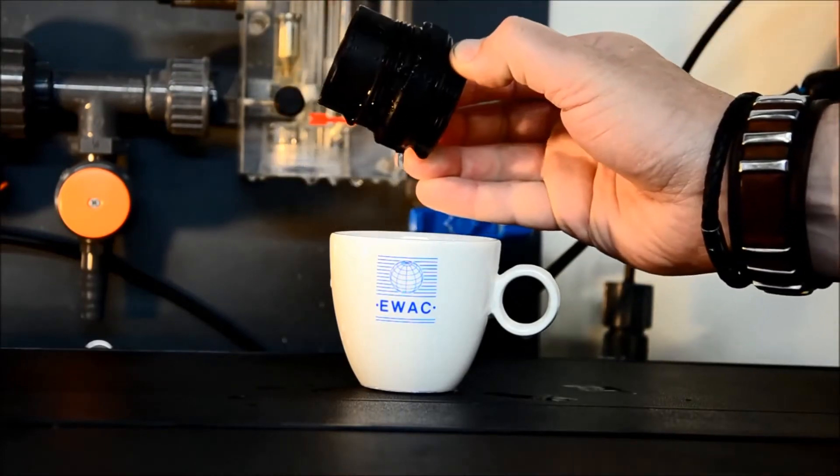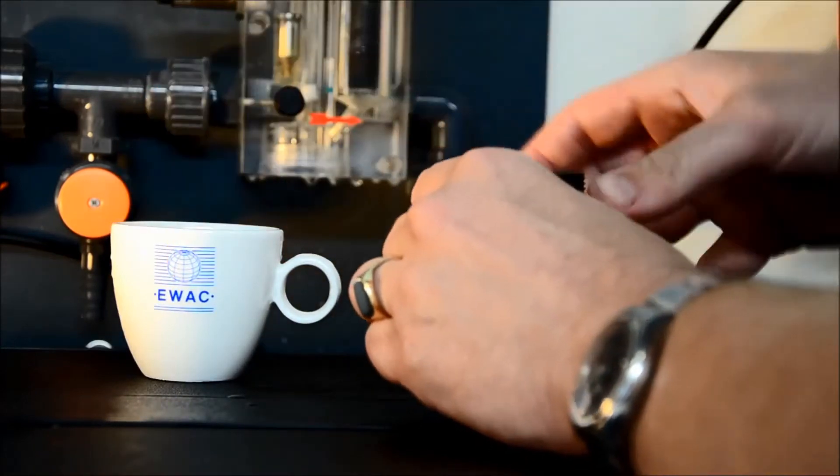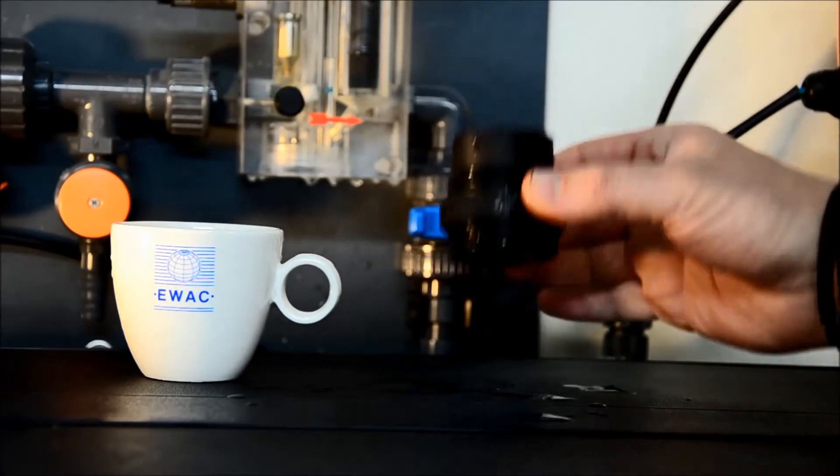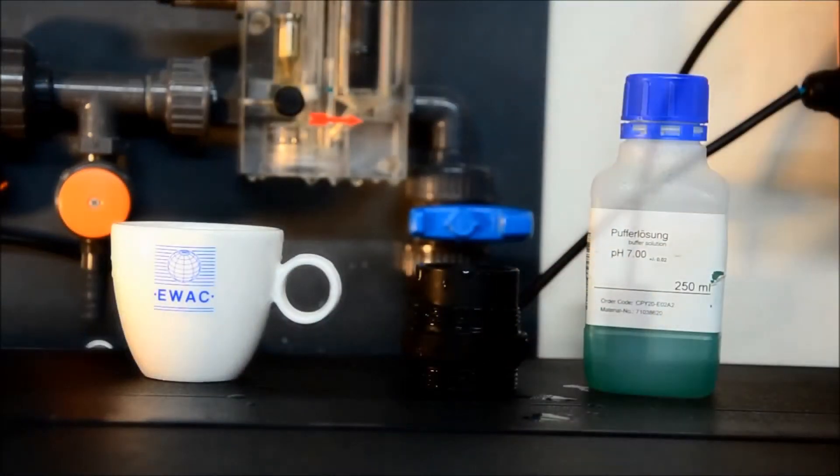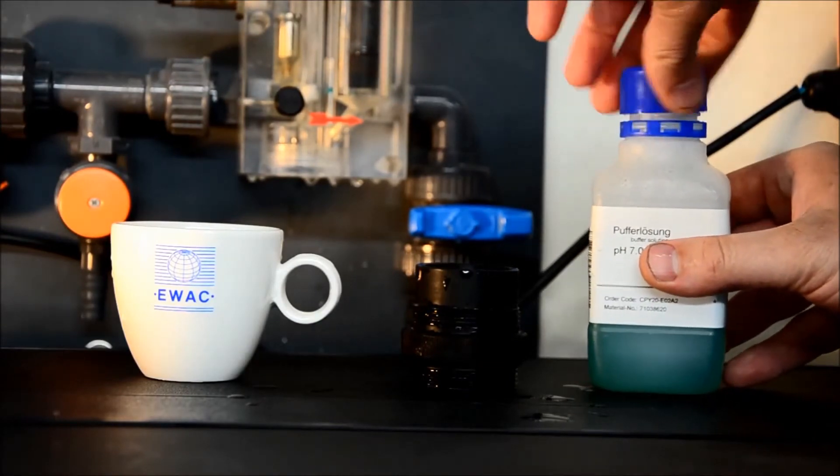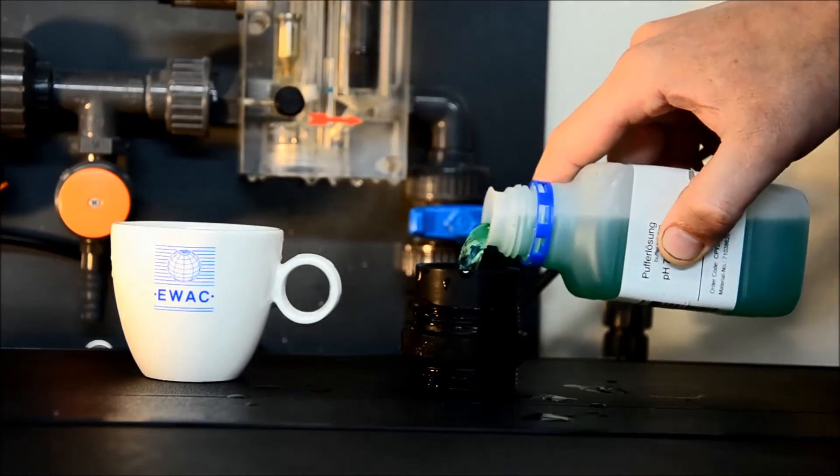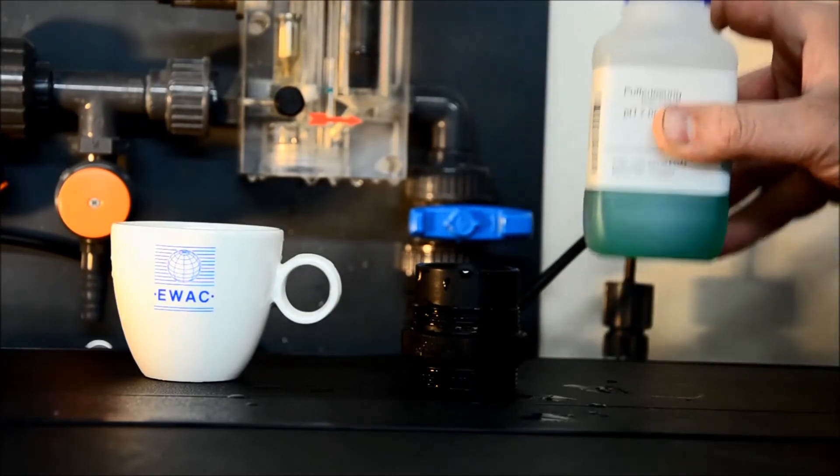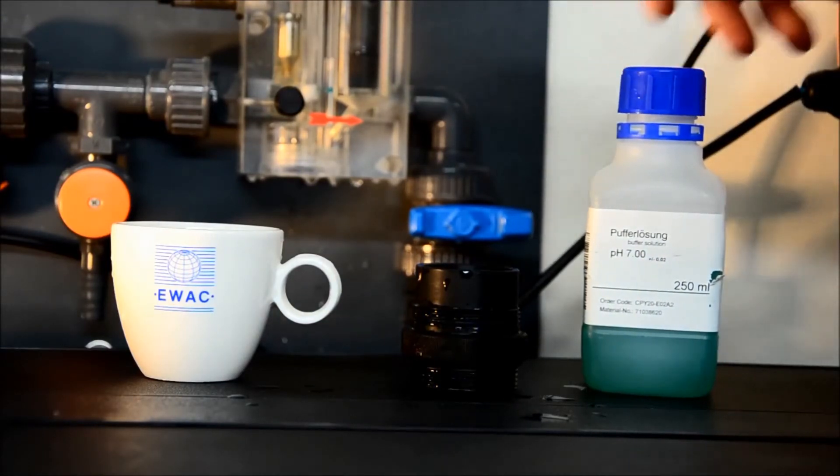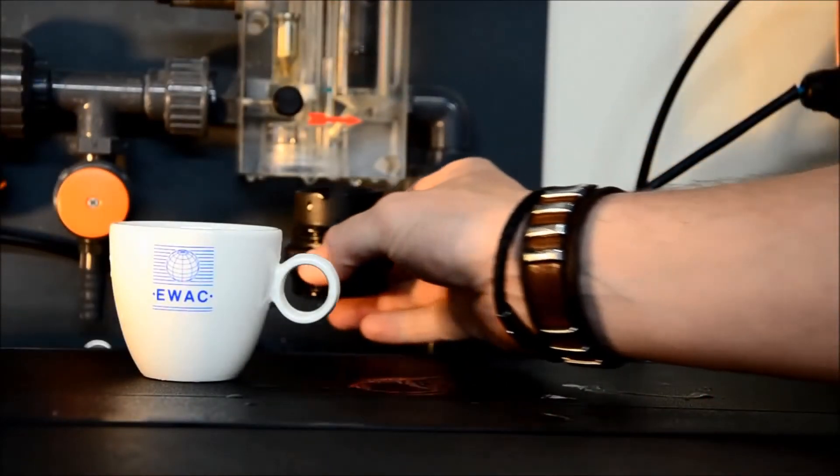Empty the cap completely. Now notice that the cap has two different sides - one is deep and one is shallow. Turn the cap with the deep end facing upwards. Take the bottle of pH 7 buffer fluid and take off the lid. Then fill the deep end of the cap up to about 5 mm below the rim. Then pick up the cap and screw it back into the measurement cell.